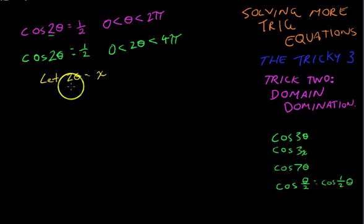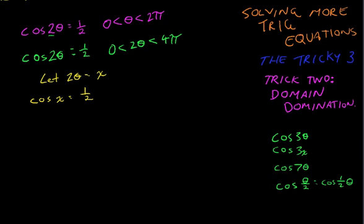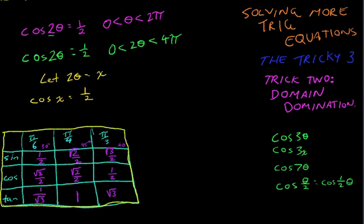So cos x equals one half. Now you'll grab your table from somewhere, wherever it's gone to. Grab your table. There it is. You'll look at your table and you'll say cos x equals a half.